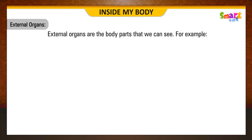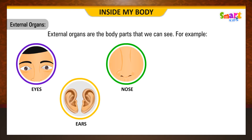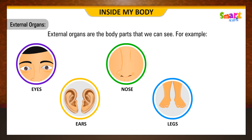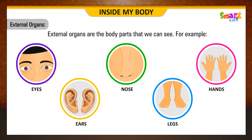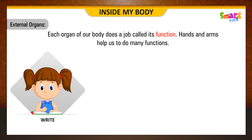External organs are the body parts that we can see. For example: eyes, ears, nose, legs, hands, etc. Each organ of our body does a job called its function. Hands and arms help us to do many functions. For example, we write,